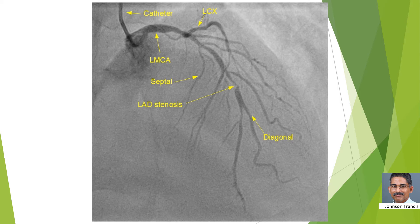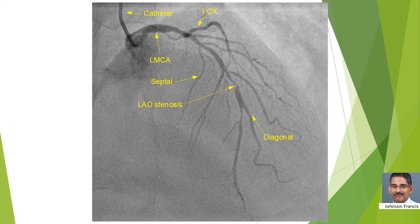This is the coronary angiogram — that is, X-ray imaging of the blood vessels of the heart by injecting an iodinated contrast material into the blood vessel. At the top you can see a small tube known as a catheter, which is inserted into the left main coronary artery. This divides into a branch known as LCX or left circumflex coronary artery, and the major branch going down is known as the left anterior descending coronary artery or LAD. It has multiple branches — diagonal branches as well as septal branches. You can see a narrowing of the vessel just before and after the diagonal branch.